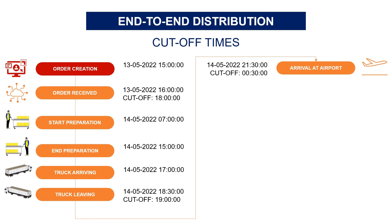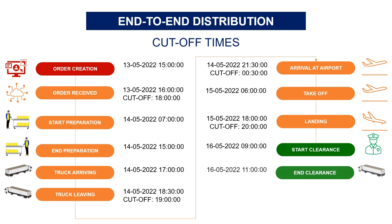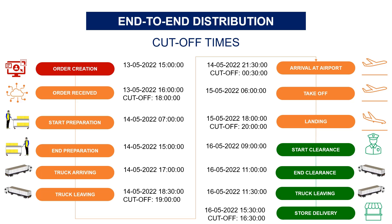Then the truck heads to the airport and arrives 2 hours later — second cut-off time. If you can't arrive before the deadline, you'll miss the flight and your shipment will wait 24 hours. Then the plane takes off and lands the day after at 6 pm — third cut-off time. If your flight lands after 8 pm, you'll miss the cut-off time for customs clearance. Finally, the day after, clearance starts at 9 am and your trucks leave to reach the store. Your last cut-off time is 4:30 pm — if your trucks arrive after that, you'll have to wait 24 hours to deliver the store.